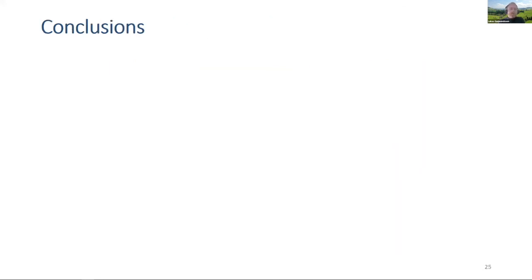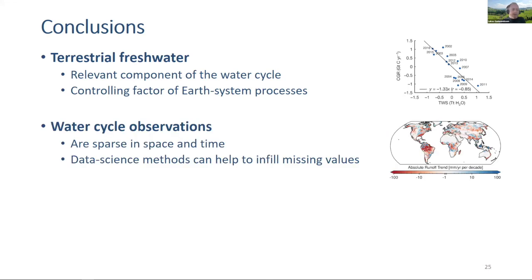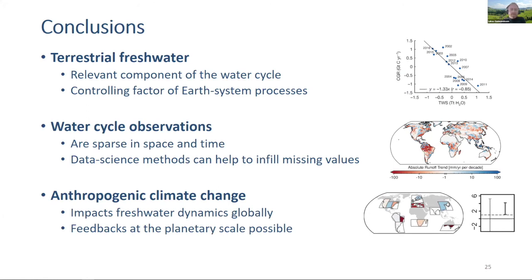In conclusion: terrestrial freshwater is a relevant component of the water cycle and a controlling factor of many Earth system processes. Water cycle observations are unfortunately sparse in space and time, but data science methods can help fill in missing values. And there is mounting evidence that anthropogenic climate change is already affecting freshwater dynamics globally, with potential implications for planetary scale feedbacks.